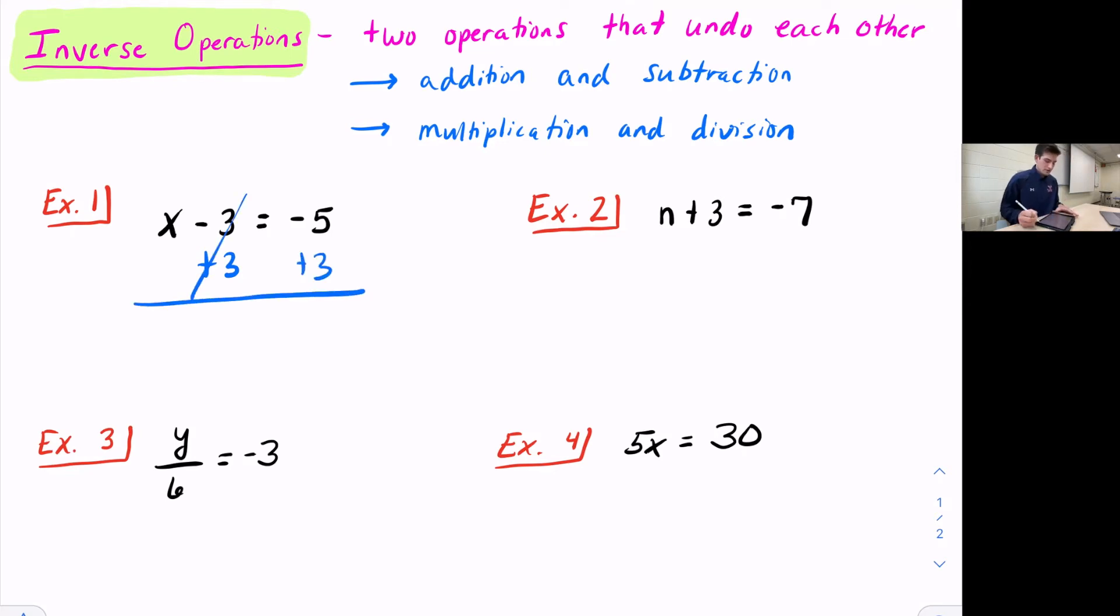Okay, so now over here, our negative three and positive three will cancel, and we're left with x equals, and we just simply do negative five plus three, and we get negative two. So our solution is x equals negative two. So we can check that by plugging in negative two right here for x, and we ask ourselves negative two minus three, is that equal to negative five? Yes, it is, so we know we're good.